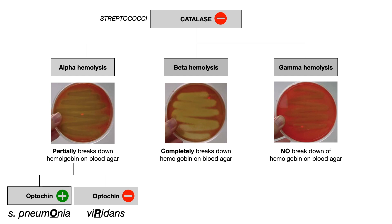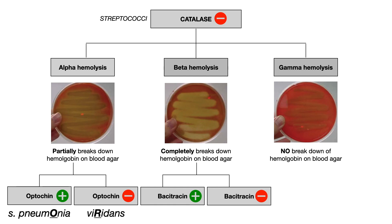Beta hemolysis refers to the complete breakdown of hemoglobin on the plate. Within the beta hemolytic category, we determine if we're talking about Strep pyogenes or another type of beta hemolytic strep based on the bacteria's response to bacitracin. If it's bacitracin sensitive, it's Strep pyogenes; if it's bacitracin resistant, it's Strep agalactiae. In this video we'll be talking about Strep pyogenes.